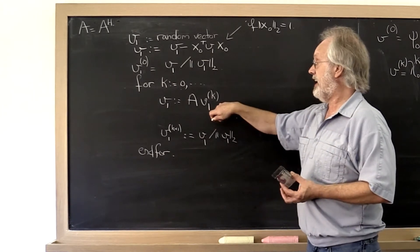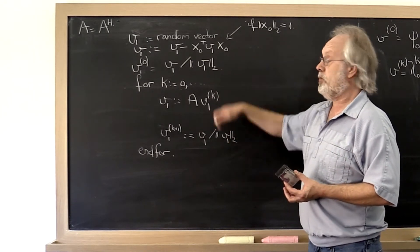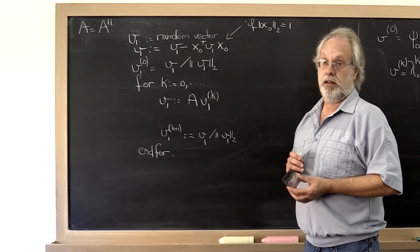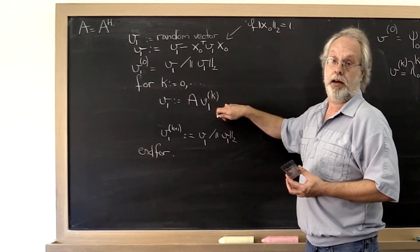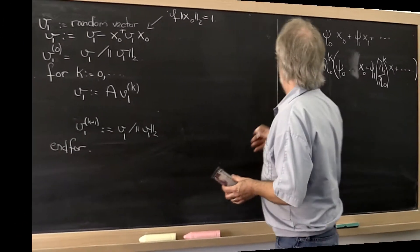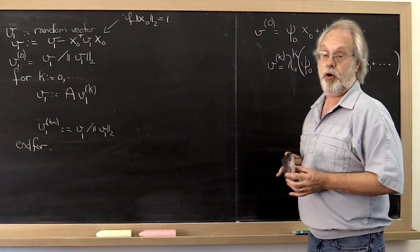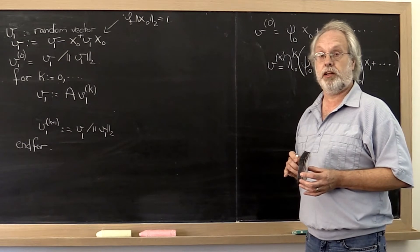Or it may be that as you actually perform your power method, that kind of error might sneak in. And once that kind of error sneaks in, eventually you would end up with a component in the direction of x0 in your calculation.